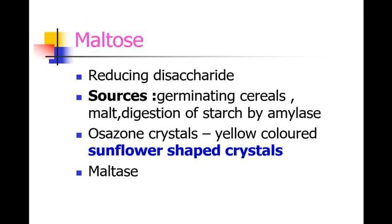Maltose is a reducing disaccharide. Sources of maltose include germinating seeds, malt, and digestion of starch by amylase also yields maltose. Osazone crystals are the confirmatory test for the identification of maltose — on the osazone test, maltose gives yellow-colored sunflower-shaped crystals.